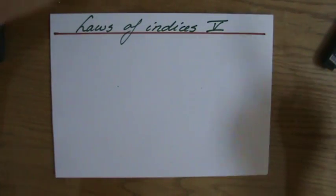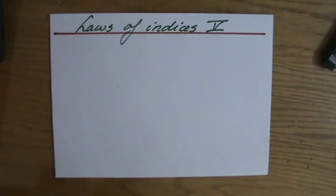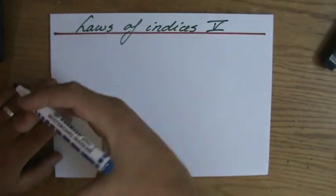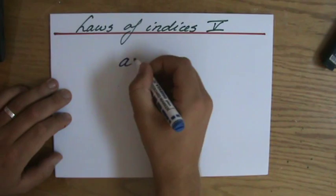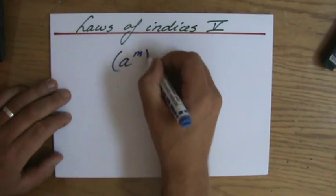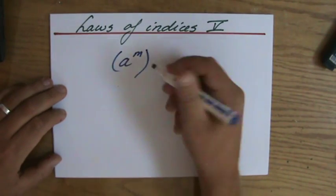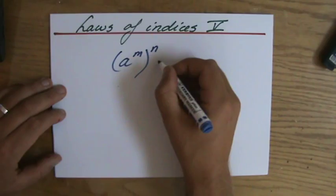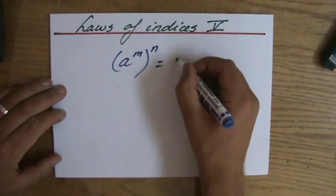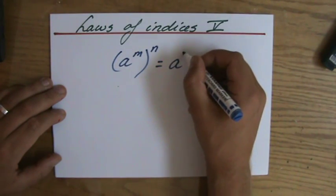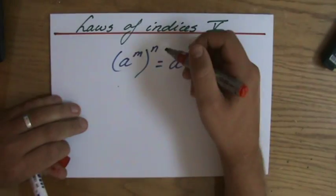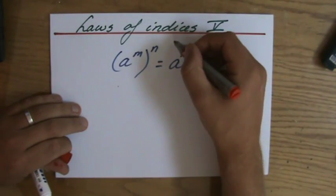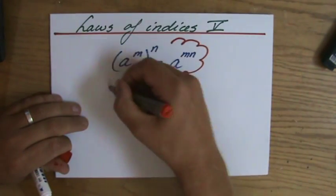We are going to talk about the third and last law of the indices. The general law is: if I have a to the power m, in brackets, to the power n, then that is the same as a to the power m times n. That's the third one, and I'm going to show you why you do not have to be scared of this law.